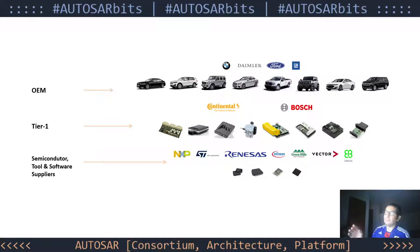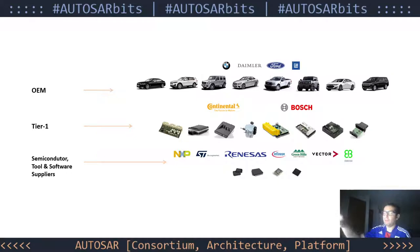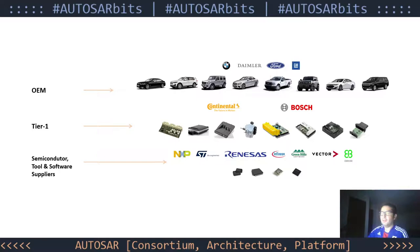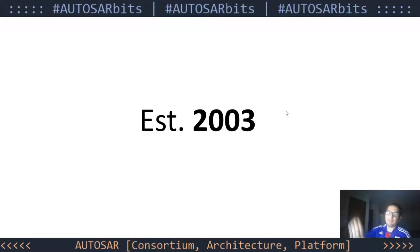What the tier one companies do is design or finish the design of these parts, manufacture them, and deliver them to the OEMs. These parts also require components, which are then supplied by, for example, semiconductor companies. So this is the automotive value chain, or the traditional value chain.